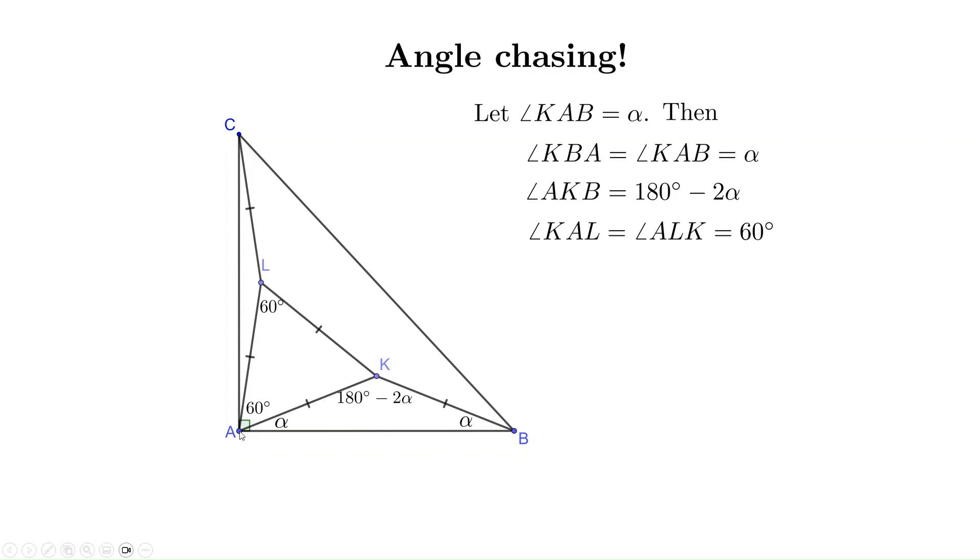Let's look at the angles at point A. Angle A is a right angle with 90 degrees, containing three smaller angles. One has measure alpha, the second one 60 degrees, and the third one, LAC, has measure 30 - α. So the total of the three angles is 90 degrees.